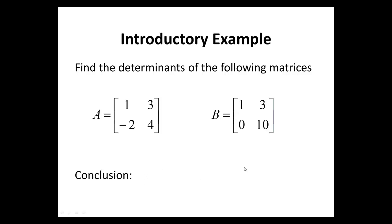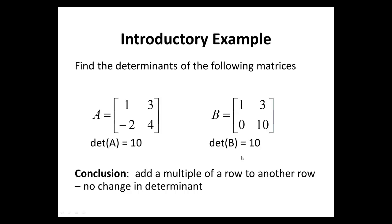Does that affect the determinants of A and B? Solving, we observe that the determinant of A is 10, the determinant of B is 10. Interesting. Can we conclude that if you add a multiple of a row to another row, there is no change in the determinant? That is a question we would also answer before the end of this lecture.